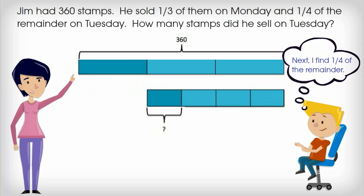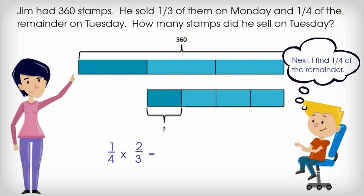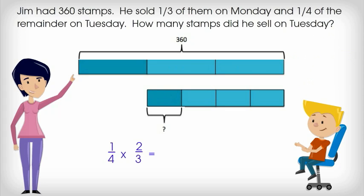Looking at the bar model, you can see that we are finding one fourth of two thirds. We can solve by multiplying. Our multiplication problem is written one fourth times two thirds. To solve, we can first cross-cancel, since four and two are both divisible by two. Four divided by two equals two. Two divided by two equals one. We've just cross-canceled and simplified the problem in advance. Now we just have to multiply the fractions. We multiply our numerators, and then we multiply our denominators.